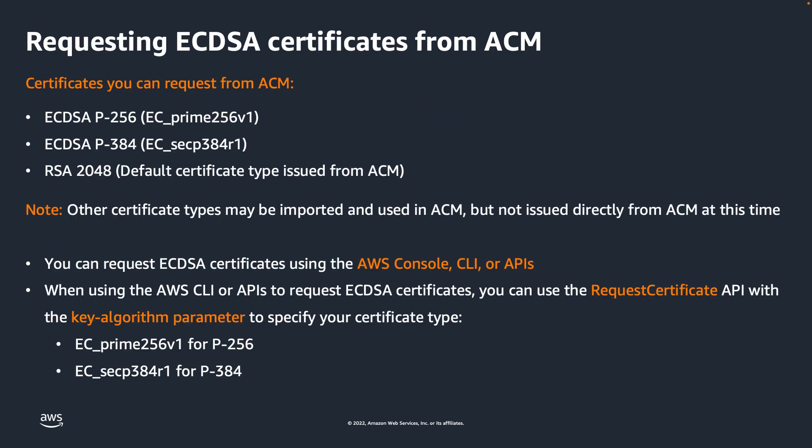Lastly, let's examine how you can request and use ECDSA certificates using the AWS console. Keep in mind that while we'll be using the AWS console for the demo, ECDSA certificates can also be requested through the AWS CLI and APIs. When requesting certificates using the API or CLI, you can use the Request Certificate API with either EC-prime-256v1 or EC-SECP-384r1 as the key algorithm parameter to request a P-256 or P-384 ECDSA certificate, respectively.